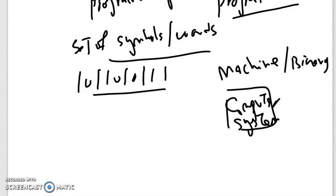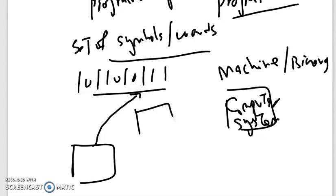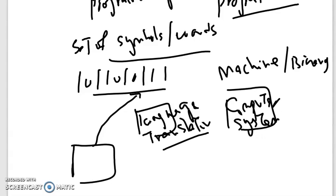For the ease of programmers, different languages are developed. A program is written in this language and then translated into machine language. Different language translators are used to translate programmer code into machine code or binary code. A programmer writes a program in an English-like language, and this software or program is translated into machine language that is executed on the hardware.